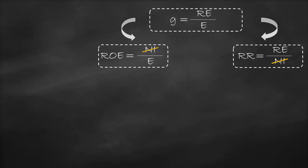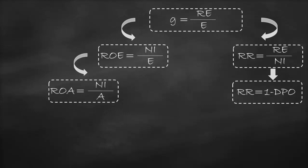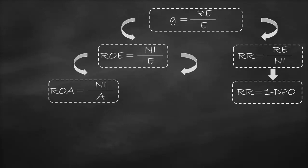The retention ratio can be rewritten as 1 minus the dividend payout ratio. Then we can use the DuPont analysis to identify the drivers of the return on equity. We can rewrite the return on equity formula as the return on assets multiplied by the financial leverage. Note that financial leverage is the same as an equity multiplier.